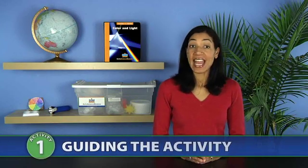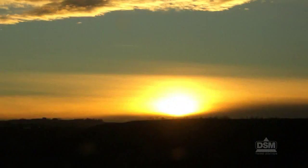To begin the activity, ask students what color is sunlight. Most students may say that sunlight is yellow. Others may think that sunlight is either white or has no color at all.